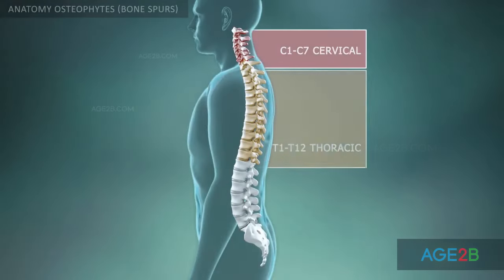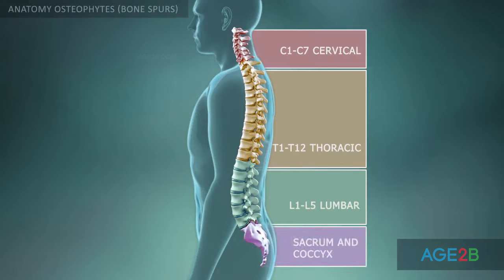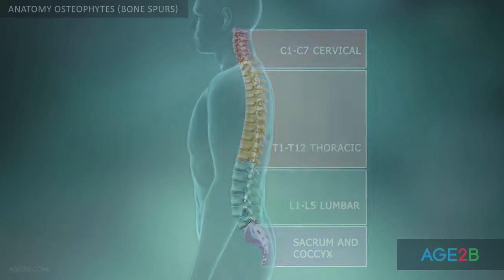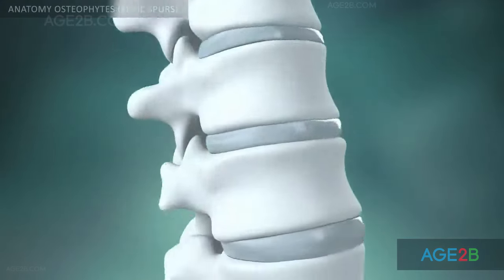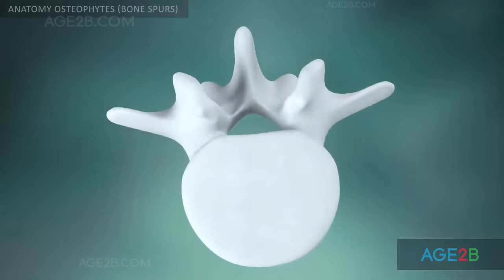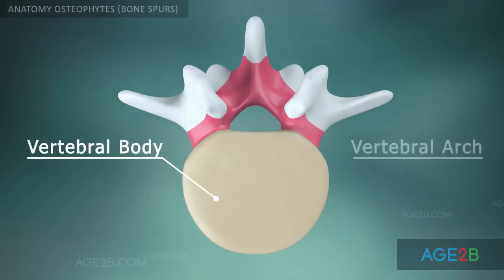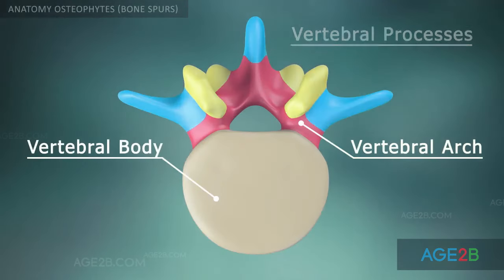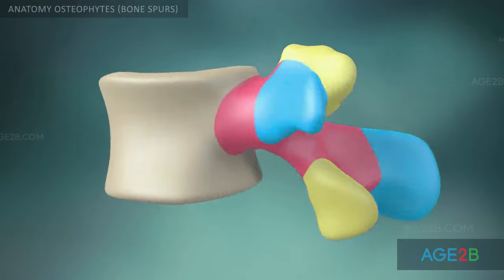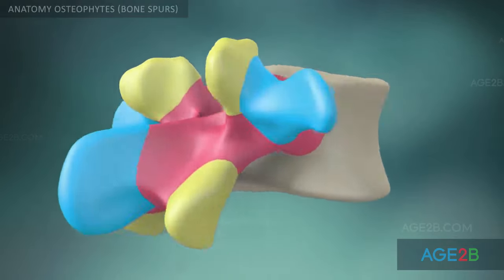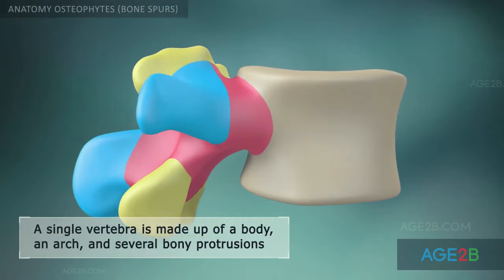The vertebrae are numbered and divided into four regions. A typical vertebra consists of a body and a vertebral arch, which has several processes for articular and muscular attachments.